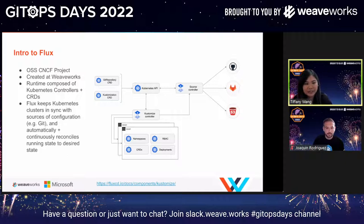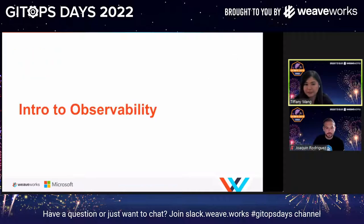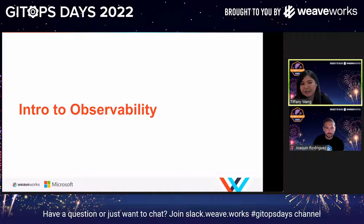Flux keeps your Kubernetes cluster in sync with the source of configuration that holds your desired state, and automatically and continuously reconciles the two. So now we have a Kubernetes cluster. We have Kubernetes that allows us to declaratively define the resources that comprise our applications, and GitOps to streamline the operations by which those resources are deployed to the cluster. We need a way to easily understand the goings-on of the cluster, and we can look to observability to solve this.